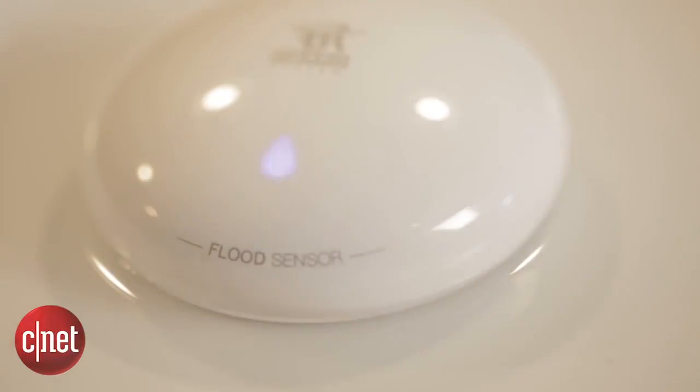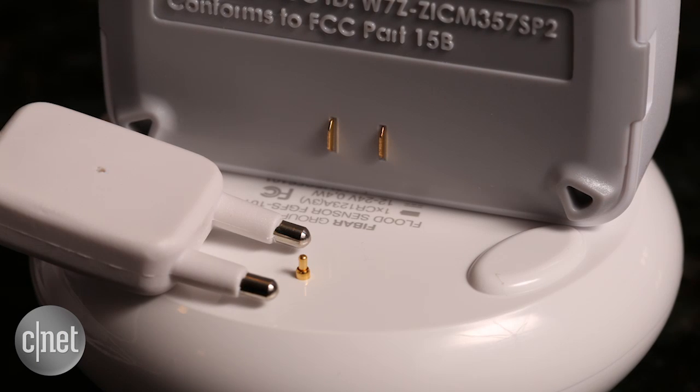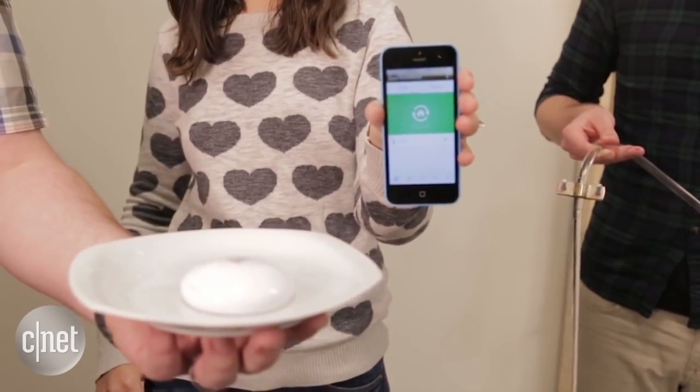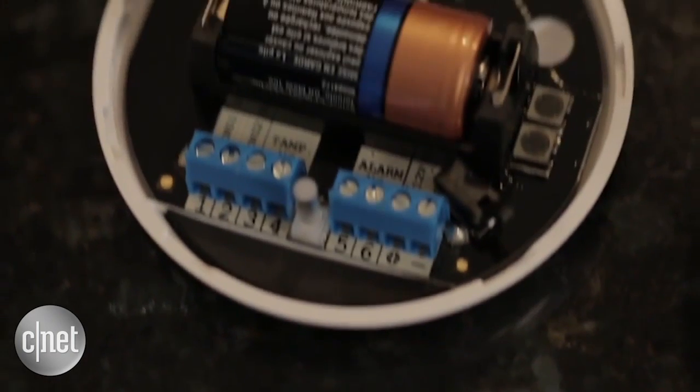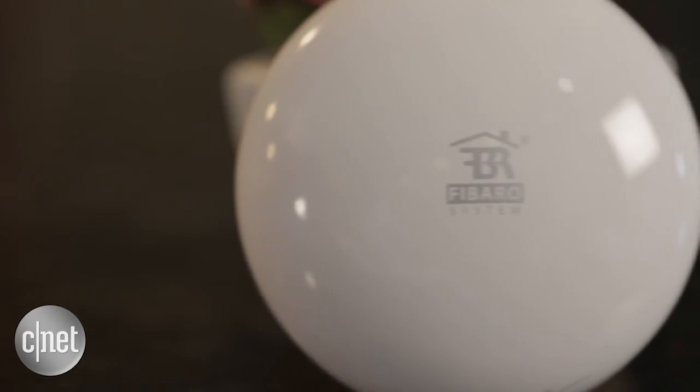I've taken a look at quite a few flood sensors over the last couple of months and basically all of them work using the same logic. You've got two or three probes that are coming out of the sensor and when those probes touch water the circuit is completed and the electricity that flows through the water sets off an alarm in the sensor.